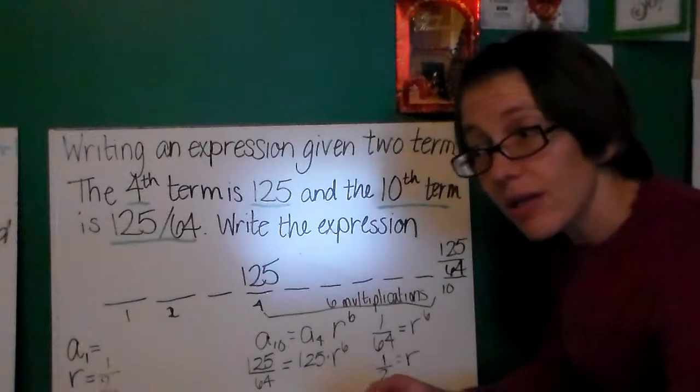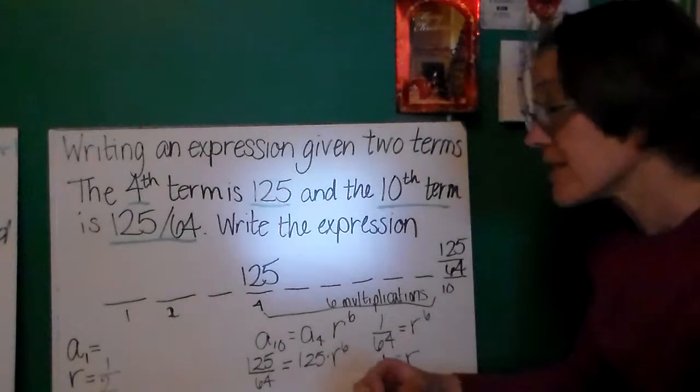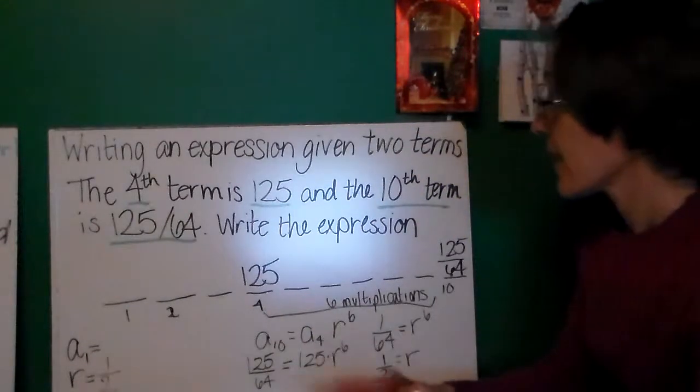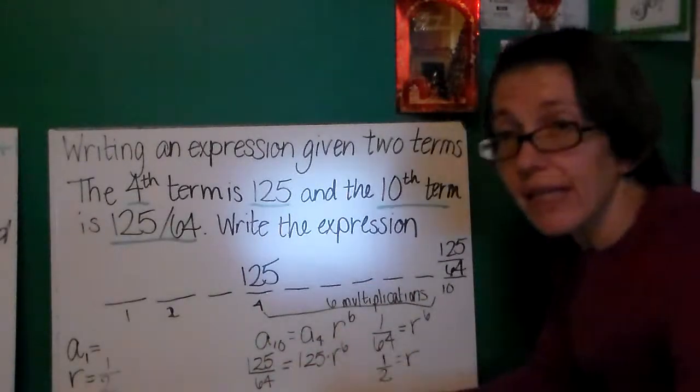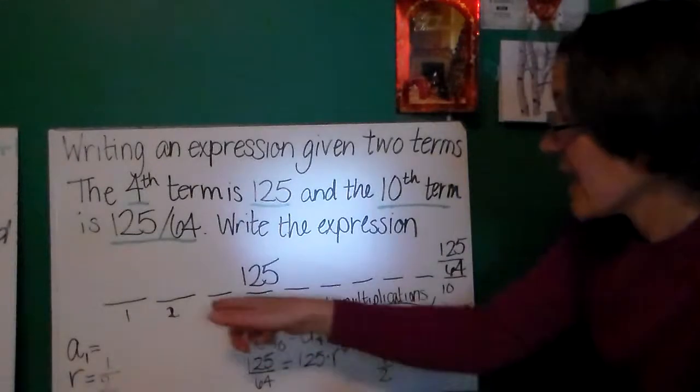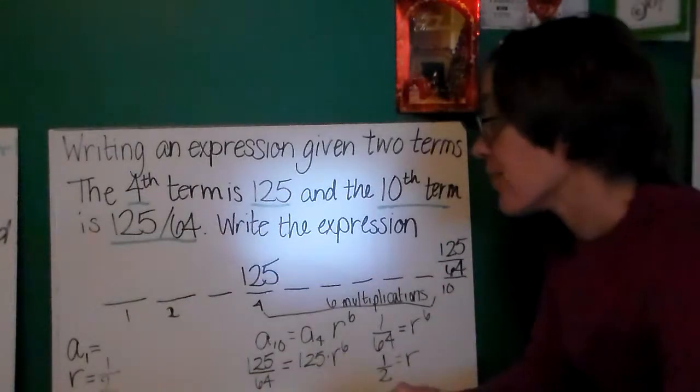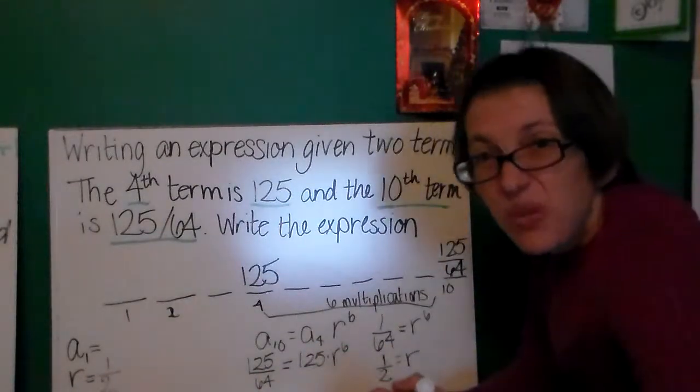So, now, I can go ahead and do this same process for finding a_1. Alternately, because I have 4, and to get back to a_1, it's so few steps, I could just divide each of these by the common ratio.